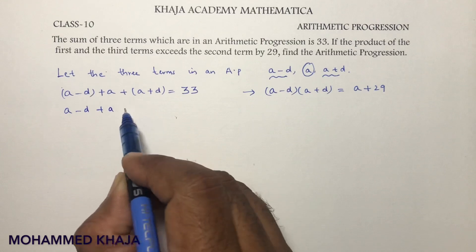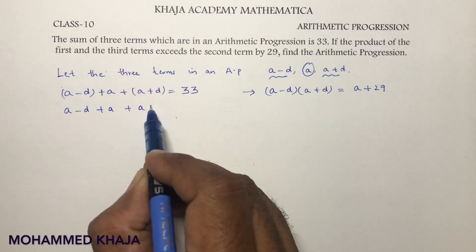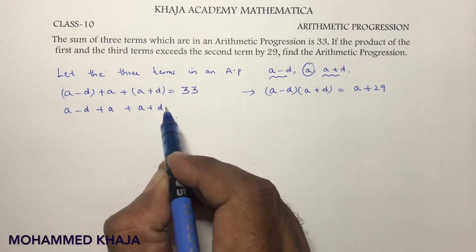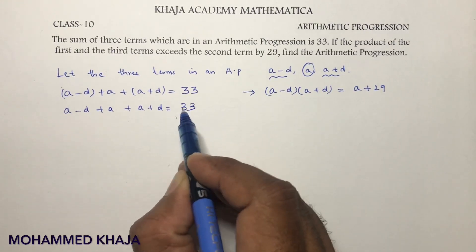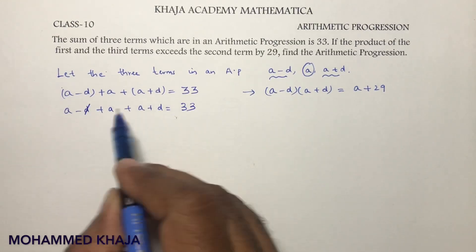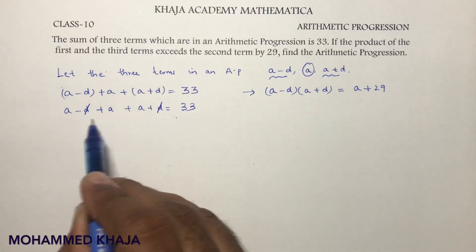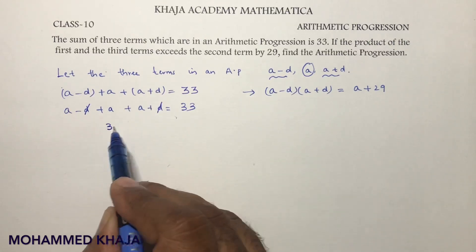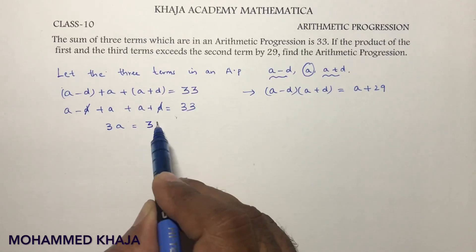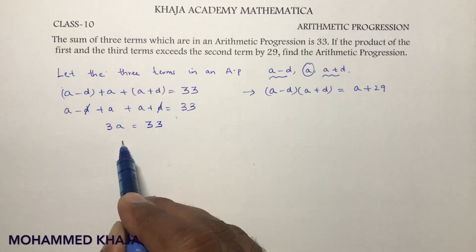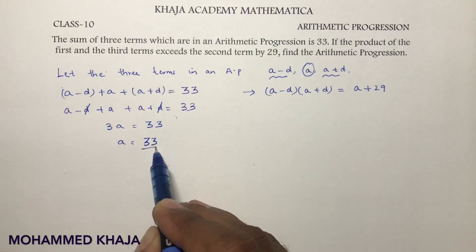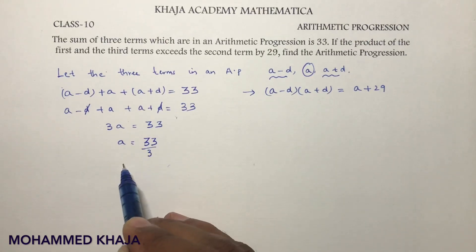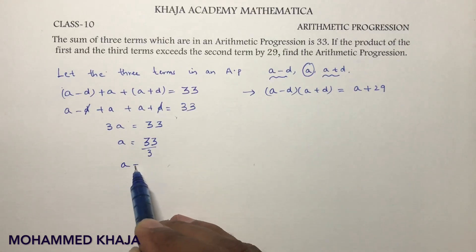Simplifying the first condition: a minus d plus a plus a plus d equals 33. The d terms cancel, so three times a equals 33, therefore a equals 33 divided by 3. The value of a is 11.